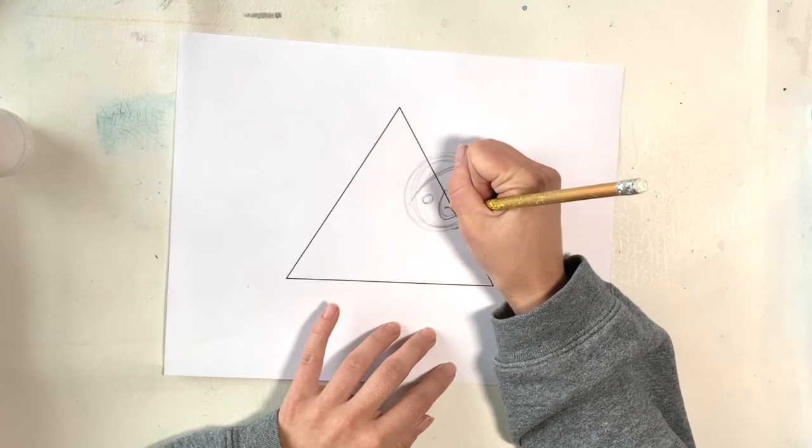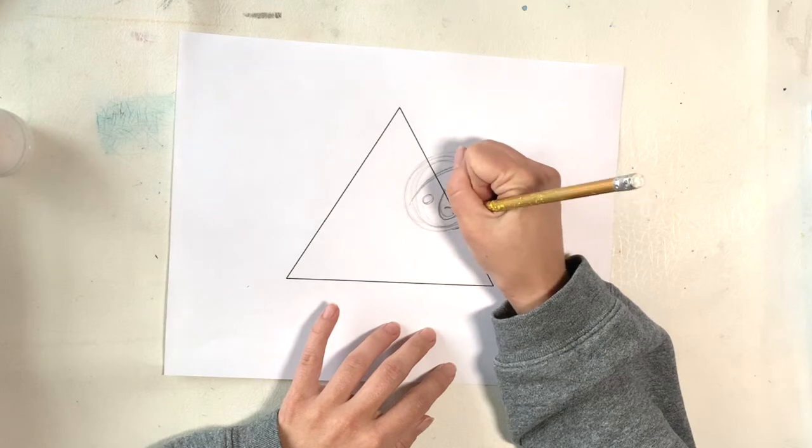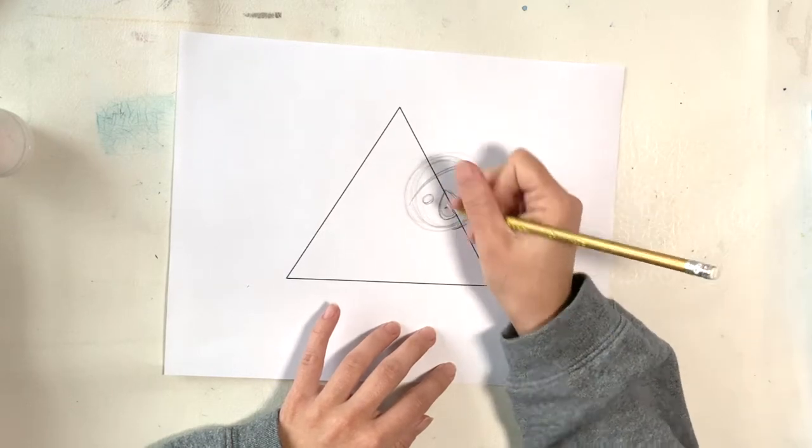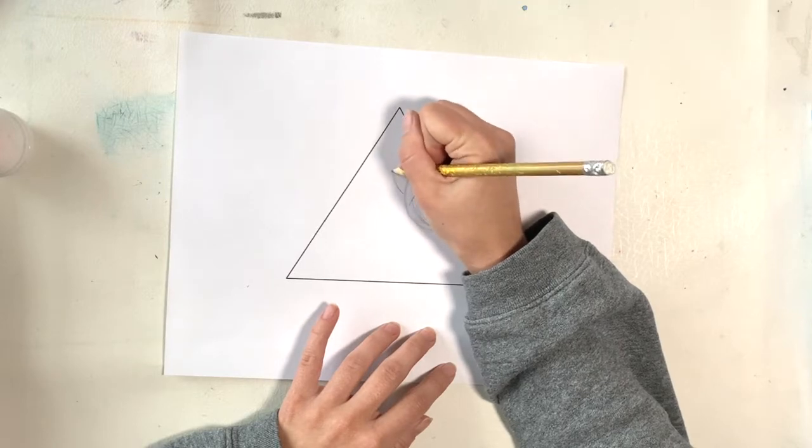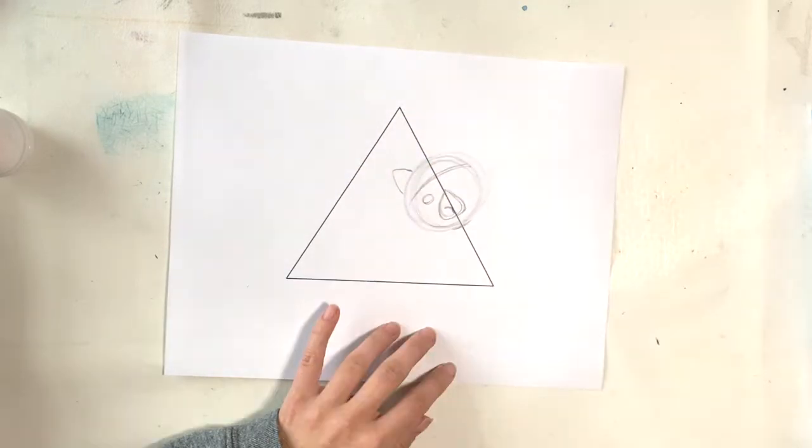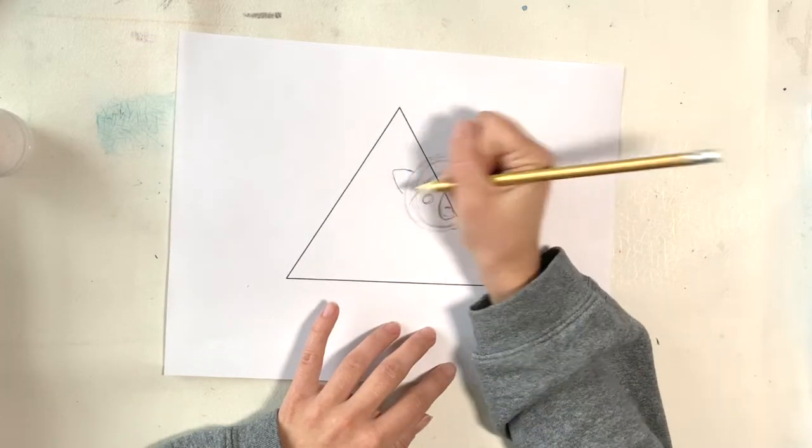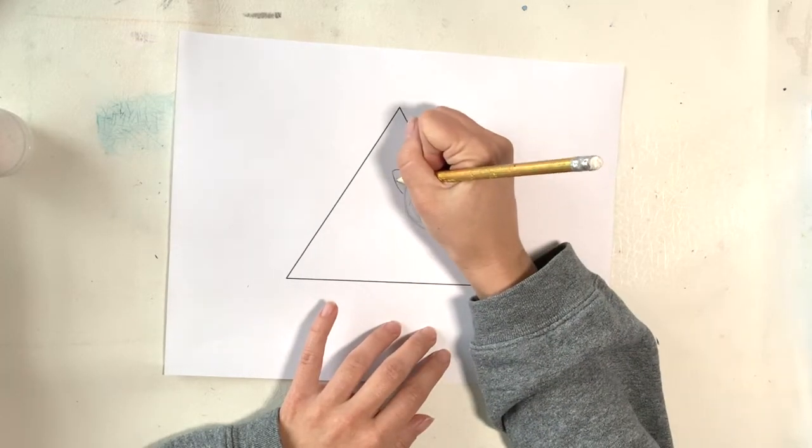So I've chosen three different animals. I'm going to do a lemur, a lion, and a red panda. Right now what I'm doing is I'm working on drawing the lemur. Basically your job is to draw half of something on each of the edges of the triangle.